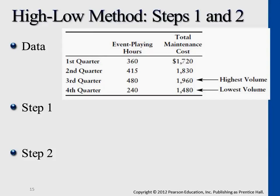The same calculation works for the third and second quarters. The third quarter has 480 hours; multiply by $2 to get total variable cost of $960. Total cost is $1,960, minus $960 variable cost, gives fixed cost of $1,000 again. For the second quarter, 415 hours multiplied by $2 gives $830 variable cost; total cost is $1,830, so fixed cost is again $1,000.